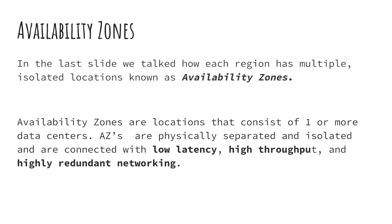On top of all this, when AWS chooses a location for an availability zone, they make sure there's no flooding history. They get multiple redundant power sources from different companies and backup power, just to make sure the data centers are running even in extreme cases.